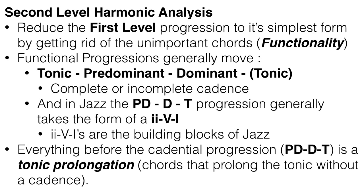This is a very important concept — you should watch my video on functionality before continuing. Functional chord progressions generally move from tonic to predominant to dominant, and then either stop there or move back to the tonic depending on whether it's a complete or incomplete cadence. In jazz, the predominant-dominant-tonic progression generally takes the form of a 2-5-1, which is really the building block of tonal jazz and is everywhere in jazz standards.